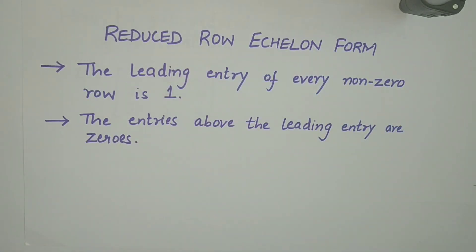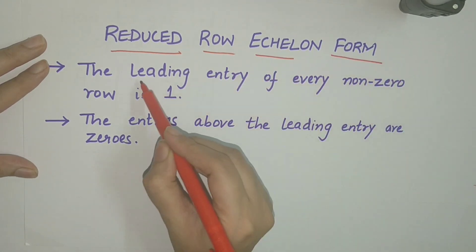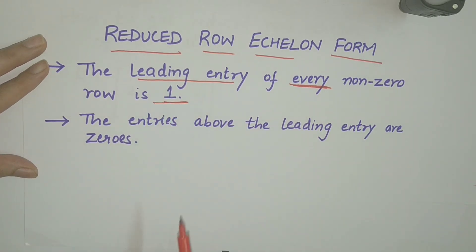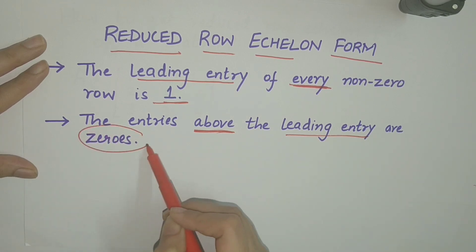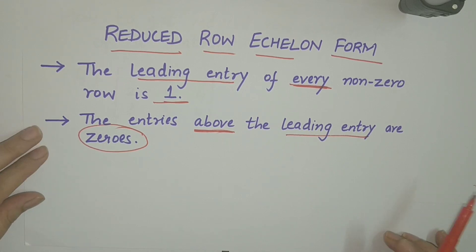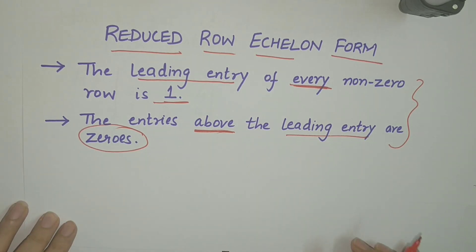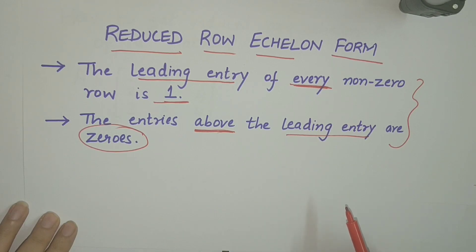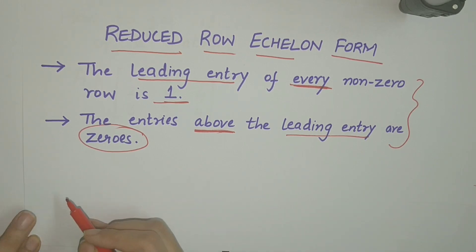Further, a matrix is said to be in reduced row echelon form if the leading entry of every non-zero row is 1, and the entries above the leading entry are zeros. So, together with the three conditions of echelon form, if the matrix also satisfies these two additional conditions, then it is said to be in reduced row echelon form. Let us take some examples to figure out what echelon form is and what reduced row echelon form is.